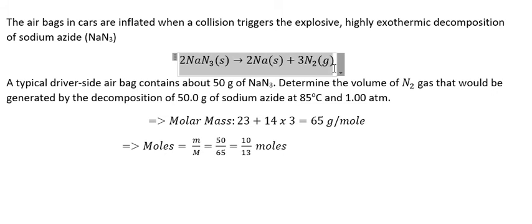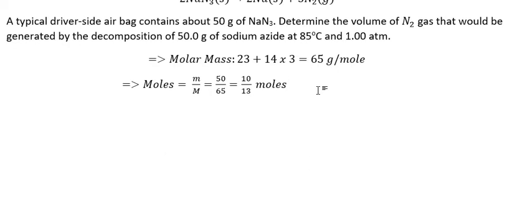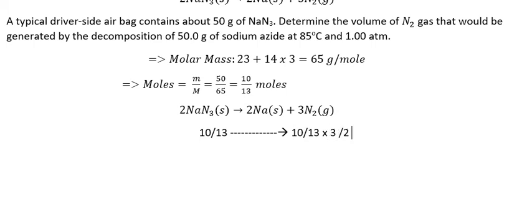Now we will use this reaction in this situation. We have 10 over 13 in sodium azide because we multiply with number 3 and divide by 2, so we have 10 over 13 multiply with 3 then divide by 2.